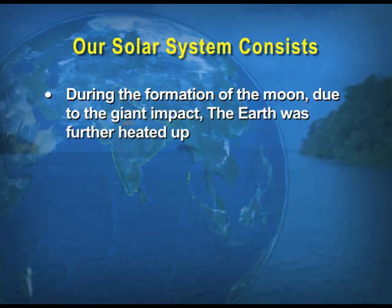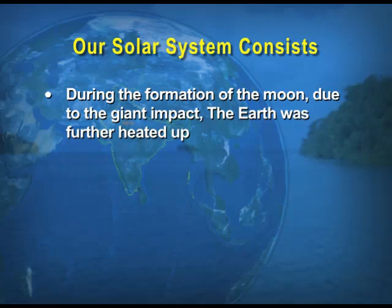During the formation of the Moon, due to the giant impact, the Earth was further heated up. It is through the process of differentiation that the Earth-forming materials got separated into different layers — the crust, mantle, outer core, and the inner core.